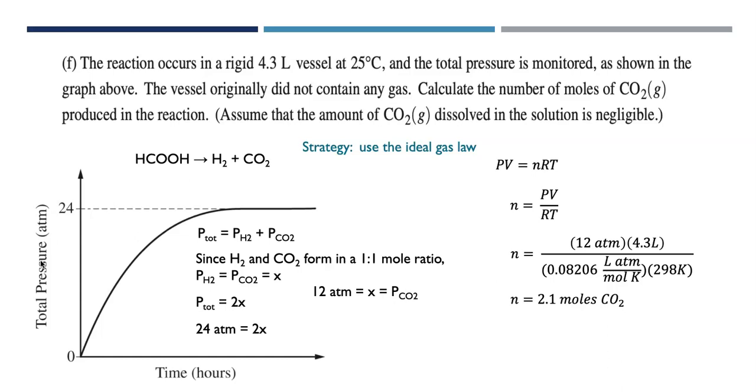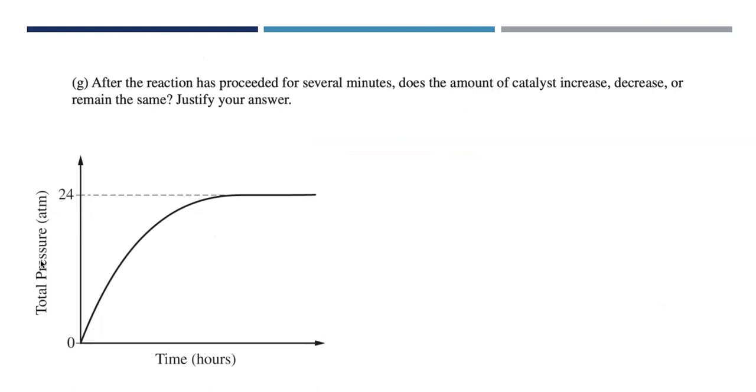In terms of scoring part F, this part was worth two points. One point for realizing that the pressure of the CO2 is about 12 atmospheres, however you got there. Even if you didn't explicitly show it and you just ended up using it later in the problem. And then the other point was for successfully solving for the number of moles of CO2. So you could not get both points here if you didn't realize that the CO2 pressure was 12 atmospheres. Part G, after the reaction has proceeded for several minutes, does the amount of catalyst increase, decrease, or remain the same?